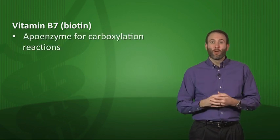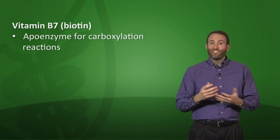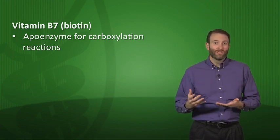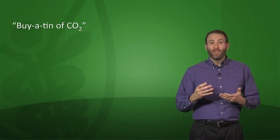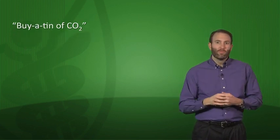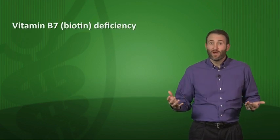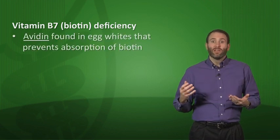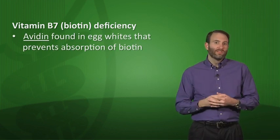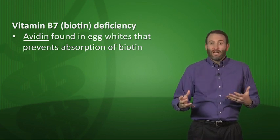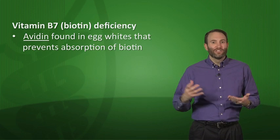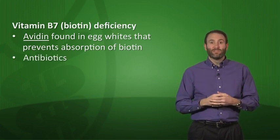Moving on to vitamin B7, which is biotin. Its metabolic role is as a coenzyme for carboxylation reactions — if you want to add a CO2 or carboxyl group to something, you use biotin. The mnemonic 'biotin and CO2' helps remember this. If you see an enzyme with 'carboxylase' in the name, it likely requires biotin. A glycoprotein called avidin found in egg whites prevents absorption of biotin, so eating large amounts of raw egg whites can cause biotin deficiency. Antibiotic use can also result in a biotin problem.